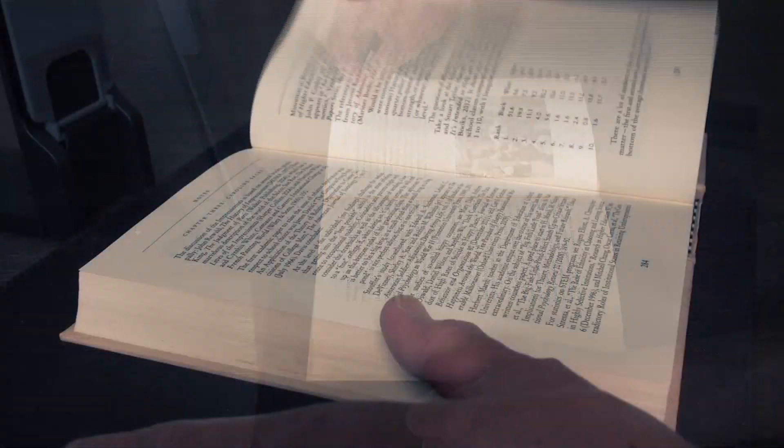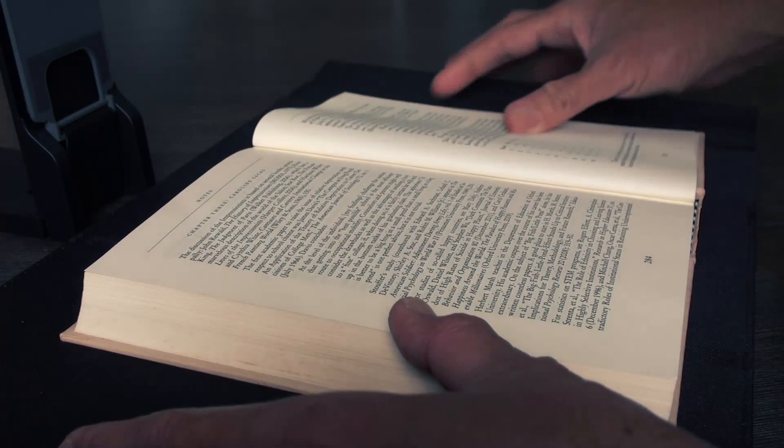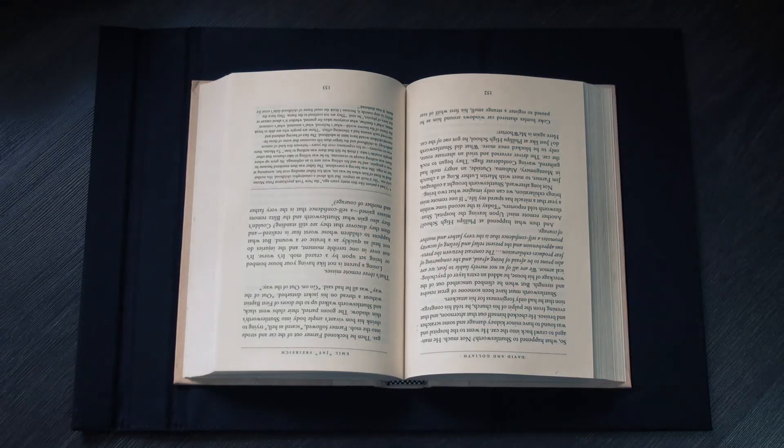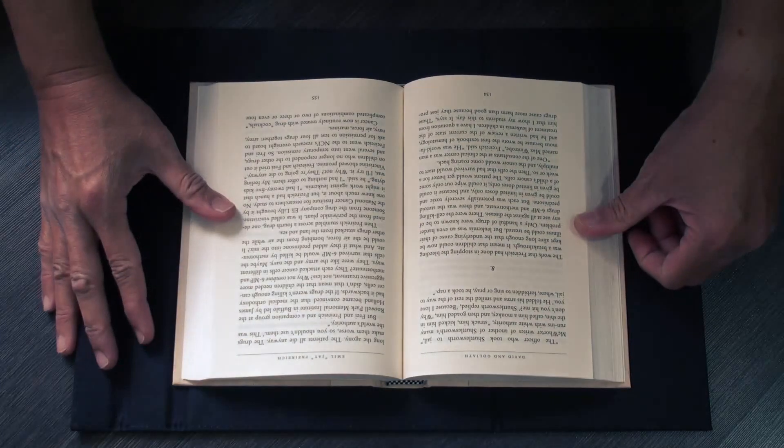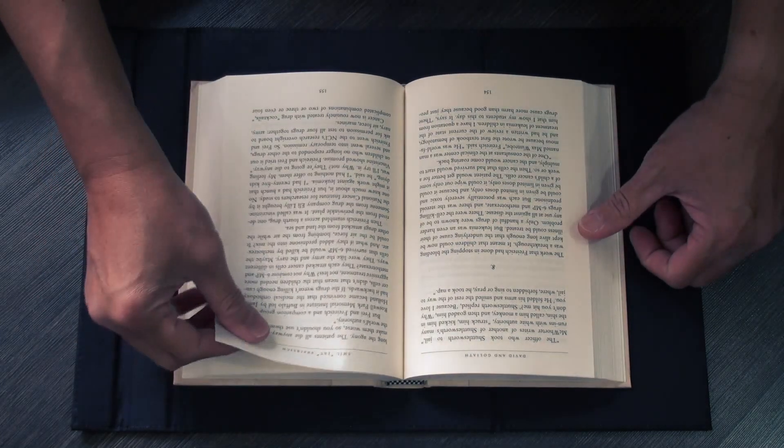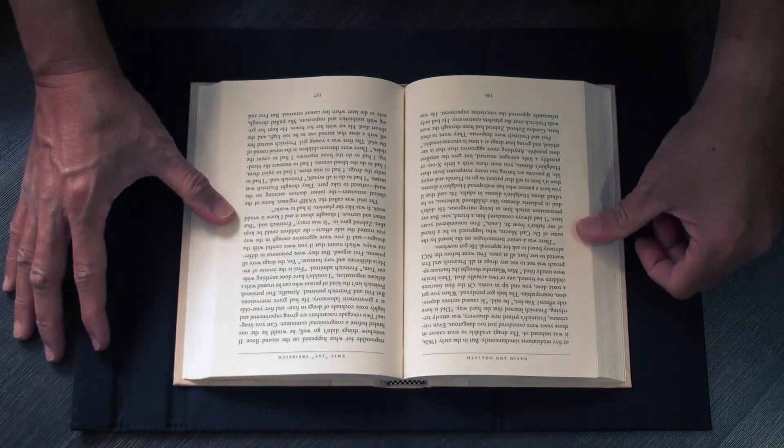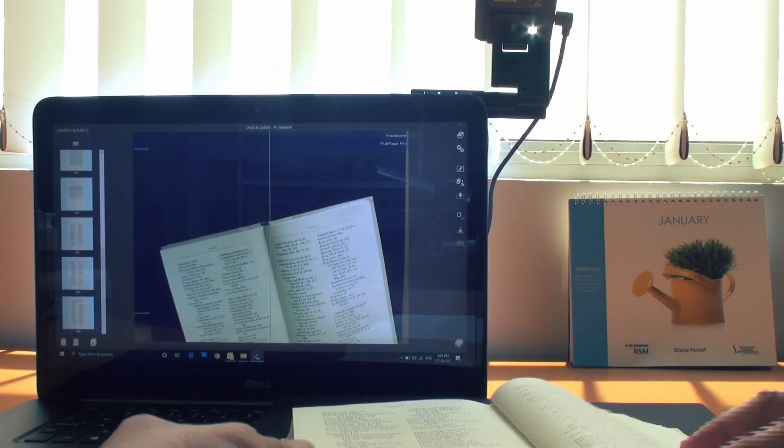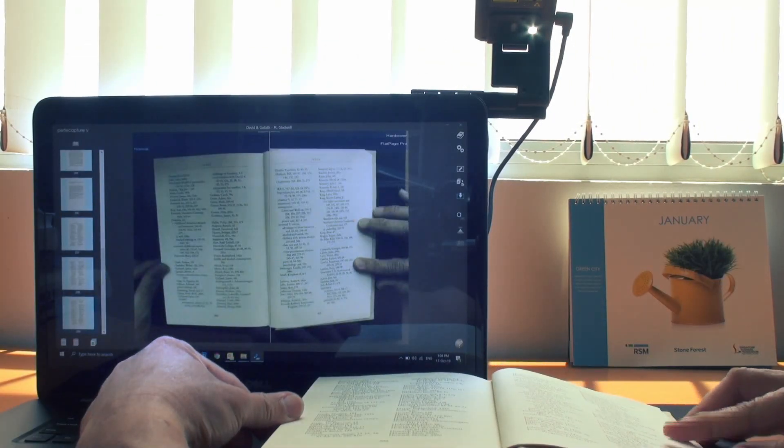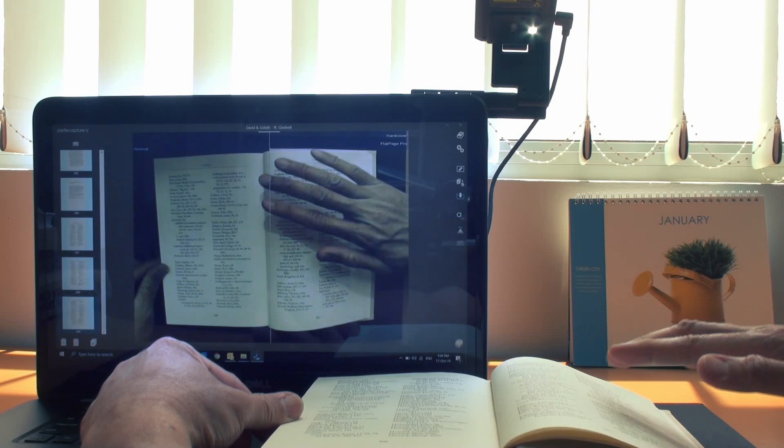The first version was initially unreliable and slow. It either reacted too slowly or falsely triggered before pages were set. Then one day, we took notice of what we initially thought was irrelevant. Whenever pages were ready for capture, something always happened - the user's hands stopped moving. So what we did was incorporate motion detection into the algorithm, and that did it.